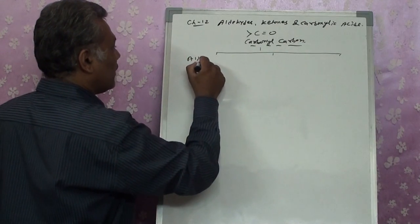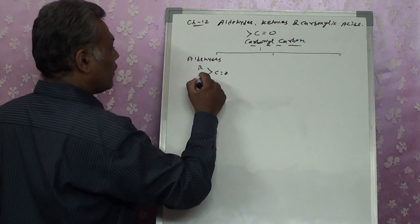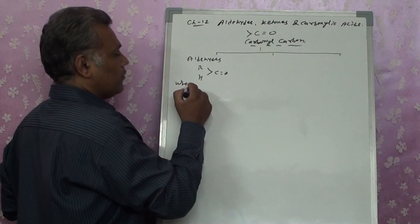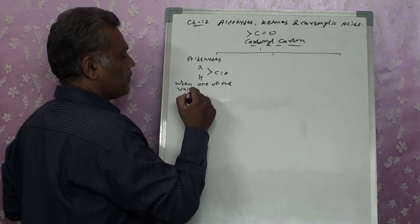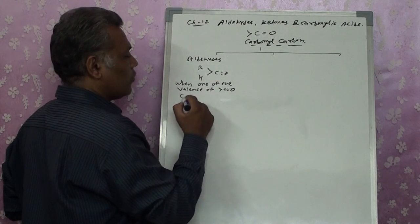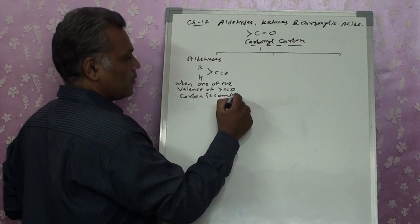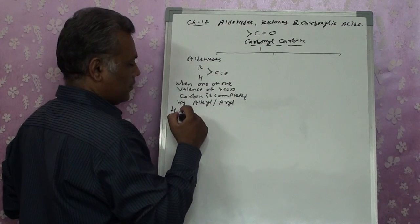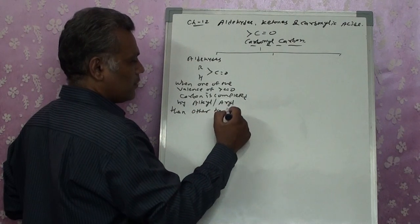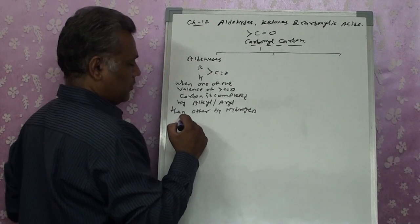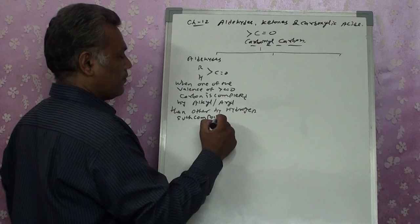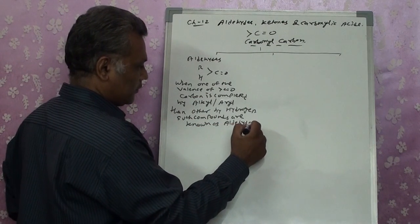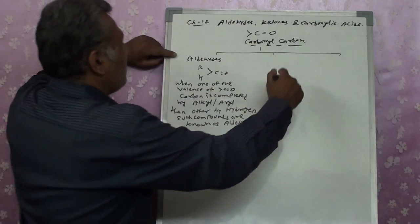For aldehydes, one valency of the carbonyl carbon is satisfied by an alkyl or aryl group, and the other by hydrogen. When one valency of the carbonyl carbon is completed by alkyl or aryl and the other by hydrogen, such compounds are known as aldehydes.